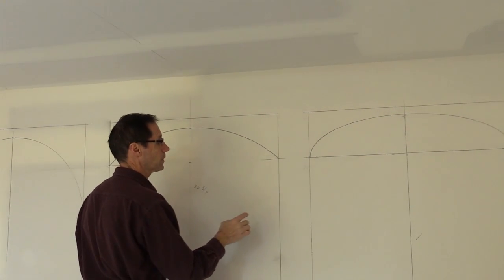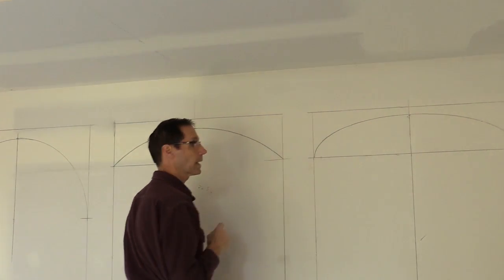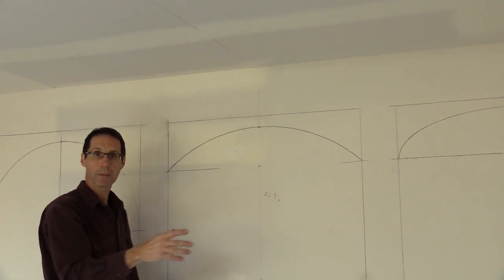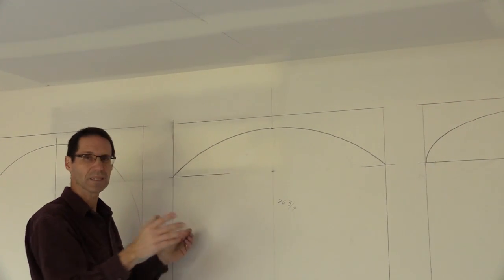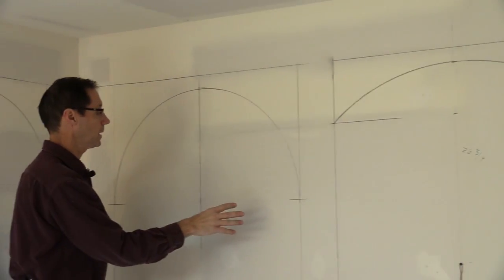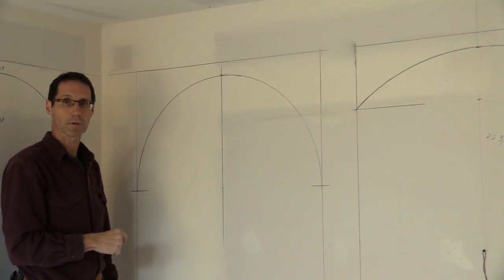So there's the three different types of arch. The elliptical arch, that has a constantly changing radius. The segment arch, which is just a segment of a larger circle, so it's actually a radius arch which is a segment of that circle. And then the first arch we did was actually a true radius arch, which is basically a half circle arch.